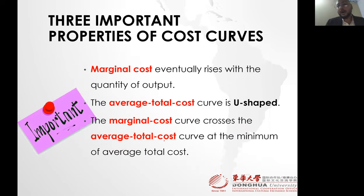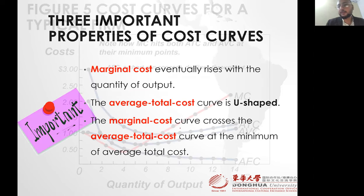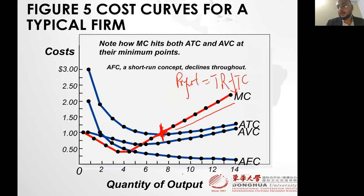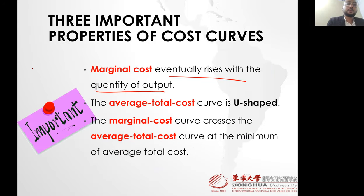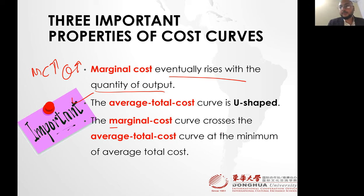Marginal cost rises as the quantity of output rises — you can see marginal cost rises with output. Average total cost is U-shaped. Marginal cost crosses the average total cost at its minimum, which means that is the efficient scale.